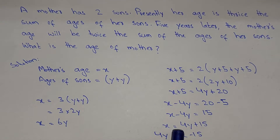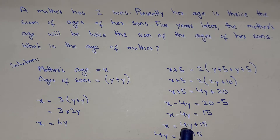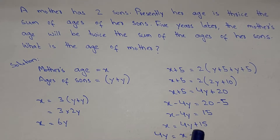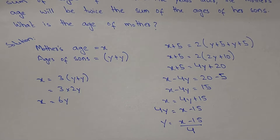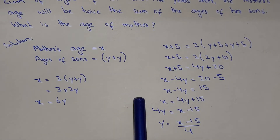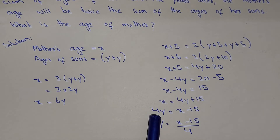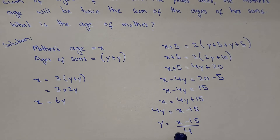So x equals bringing minus 4y to the right-hand side gives plus 4y, so x equals 4y plus 15. Rearranging: 4y equals x minus 15. Since 4 is in multiplication, it becomes division, so y equals x minus 15 divided by 4.